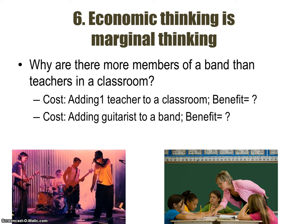Having a band without a guitarist would not be a good thing. The additional benefit of adding a guitarist, then a drummer, then a bass player to a band is huge — you need those members. So the additional cost is less than the additional benefit. Whereas adding another teacher to a classroom, the additional benefit may not be greater than the additional cost, which is why typically there's only one teacher in a classroom.